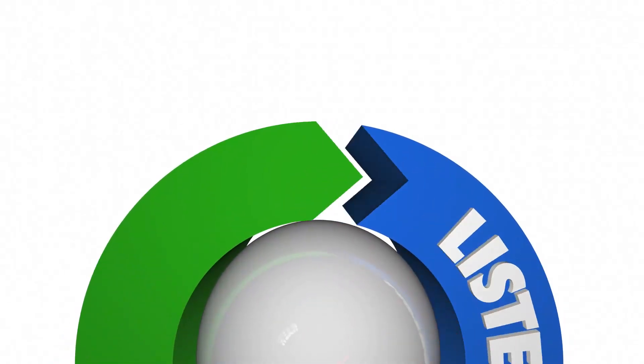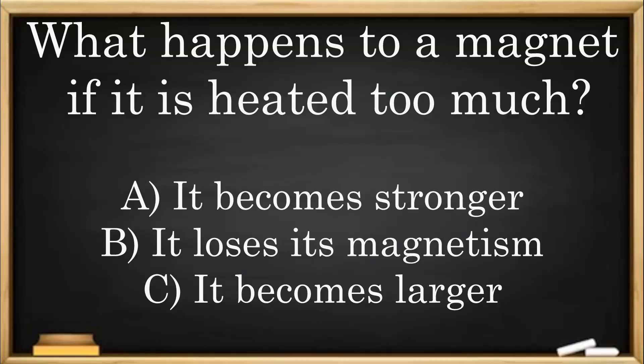Check for understanding. What happens to a magnet if it is heated too much? A. It becomes stronger. B. It loses its magnetism. C. It becomes larger.